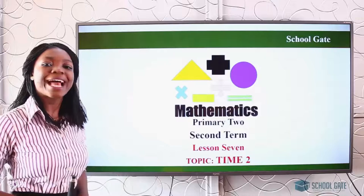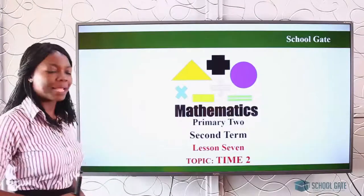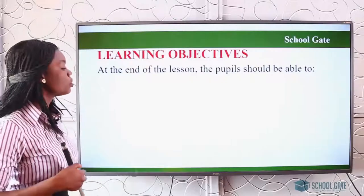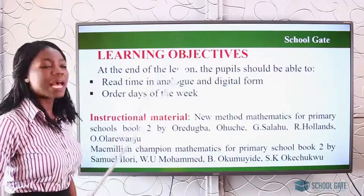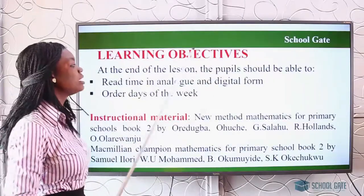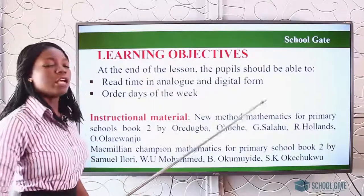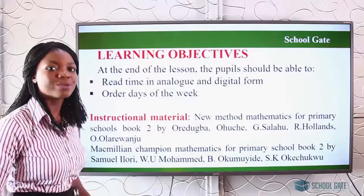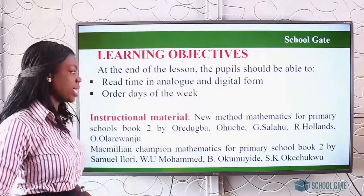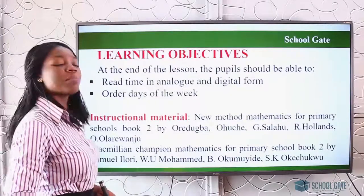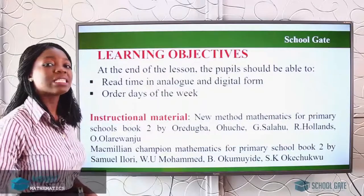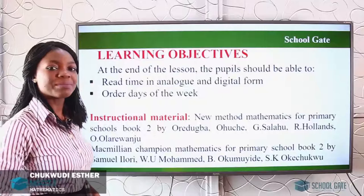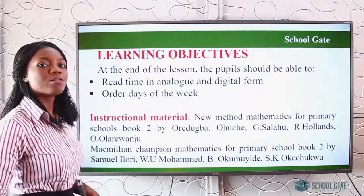Today we'll be looking at another aspect of time. Our learning objectives: at the end of the lesson, you should be able to read time in analog and digital form, and you should be able to order days of the week. Our instructional material will be the New Method Mathematics for Primary Schools Book Two and the Macmillan Champion Mathematics for Primary Schools Book Two.